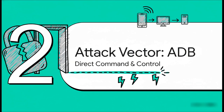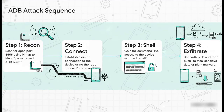Let's get into our first attack vector — the Android Debug Bridge, direct device command and control. ADB is obviously an essential tool for developers, but when it's misconfigured and left exposed on a network, it's basically a wide open door. It provides a direct, unauthenticated path to shell access and gives an attacker complete C2 over the device. The attack sequence is brutally simple: start with NMAP scanning for port 5555, then connect with 'adb connect', get shell access with 'adb shell', and exfiltrate data using native commands like pull and push.